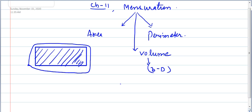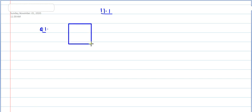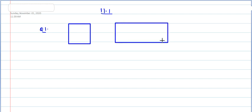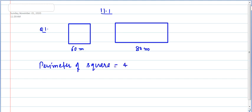I am going to solve the NCERT part. Now starting exercise 11.1, first question: A square and a rectangular field with measurements as given in the figure have the same perimeter. Which field has a larger area? We have to find the larger area. The first figure is a square with side 60 metres, and the second figure is a rectangle with length 80 metres. Both have the same perimeter. Perimeter of square = 4 × 60 = 240 metres.